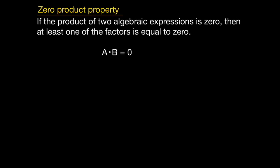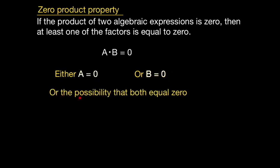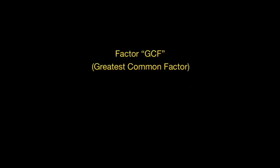The first one is the zero product property, which basically says that if you have the product of two things and that product is equal to zero, either your first term is equal to zero or your second term is equal to zero — or both can be zero. This is the property we will be checking for these quadratic equations. The second key concept is that I want you to be proficient on how to factor the GCF, since that's going to play an important role when applying the box method.